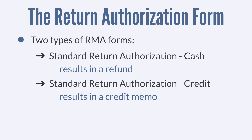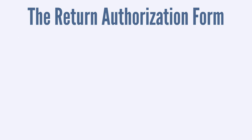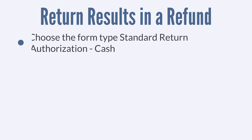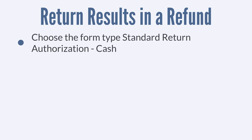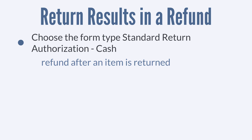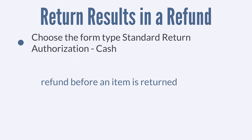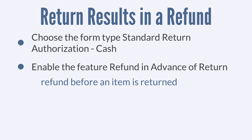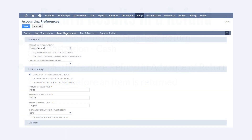First, let's look at return authorization forms that result directly in a refund to the customer. If you want the return to result in a refund instead of a credit, you would manually select the form type standard return authorization cash on the return authorization form. Doing this allows you to authorize a direct refund to customers after they have returned their items. However, if you want to be able to refund customers before they return their items, then you would need to enable the feature refund in advance of return, which is located in the order management tab of your accounting preferences.